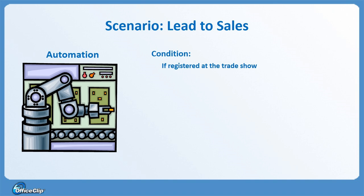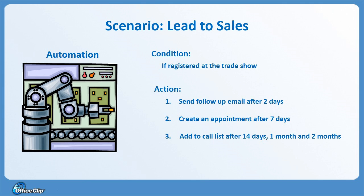In OfficeClip CRM, you create a condition to test if the contact is registered at the trade show. This can be done by setting a contact field called Contact Source. If this condition is satisfied, create a few delayed actions in the system. The first action sends a personalized email after two days.